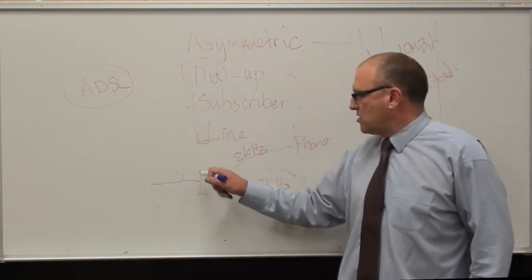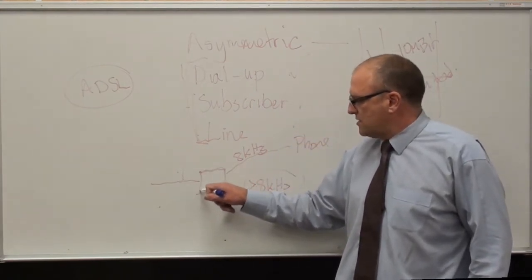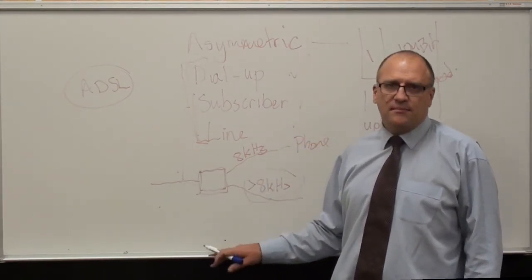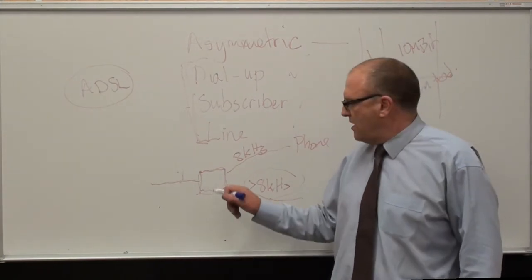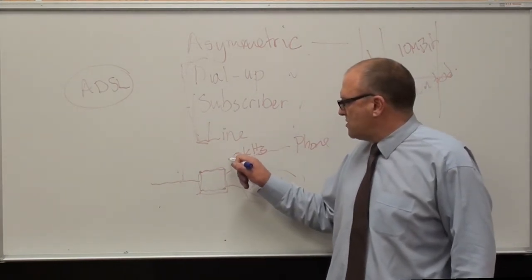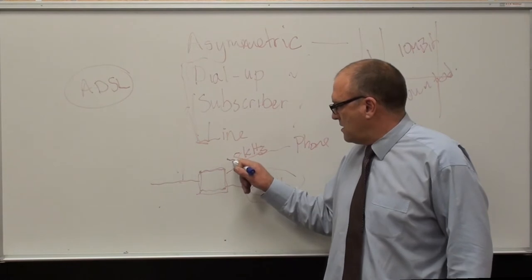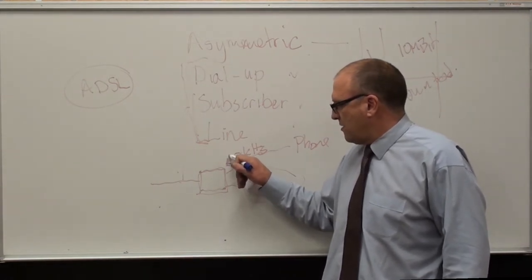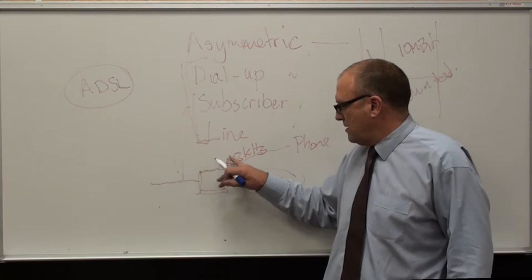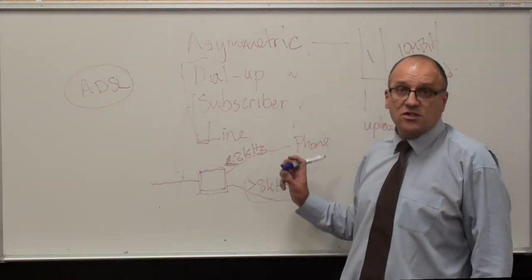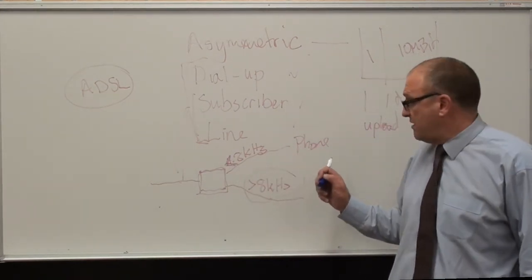There was a splitter box, literally about that size, hanging off the wall socket. Anything less than 8 kHz was deemed to be voice and it went to your phone.